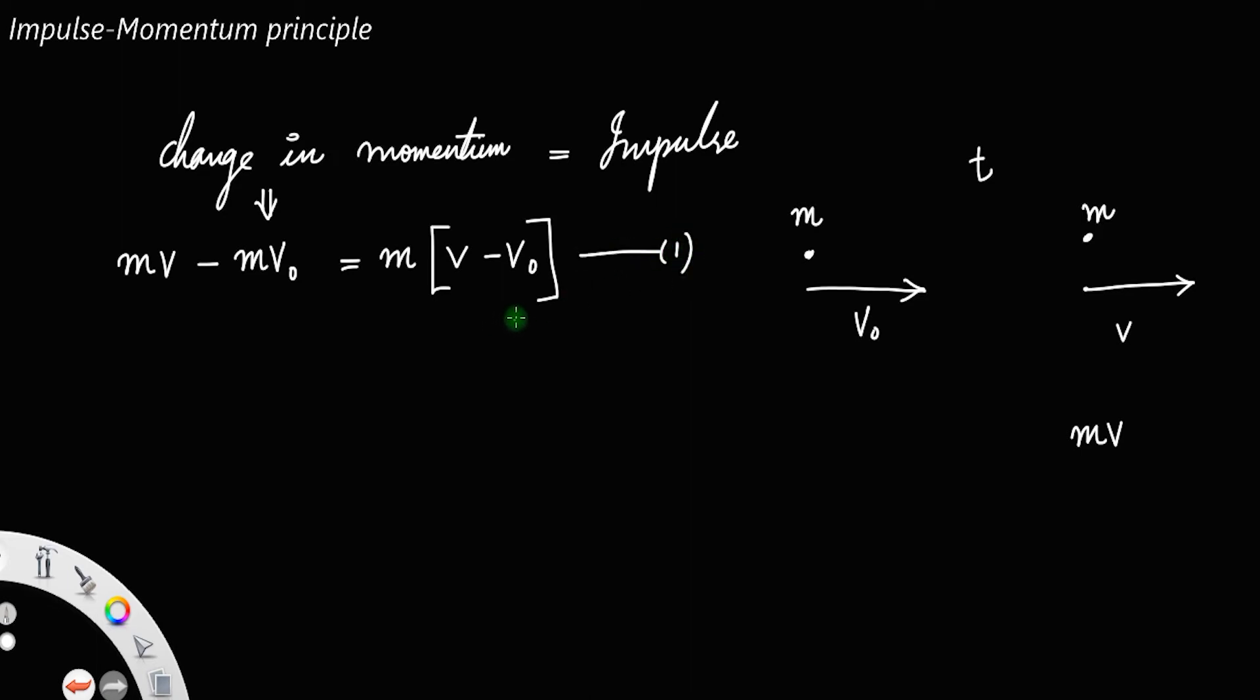From the first kinematic equation of motion, you have v equal to v0 plus at, which implies v minus v0, that is if you take this v0 to the left, you will get v minus v0 equal to at. Let us call this as equation number 2.